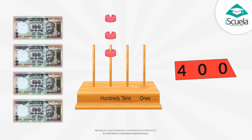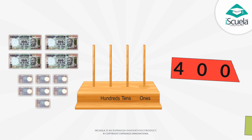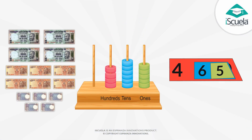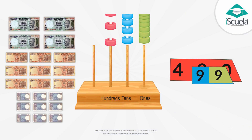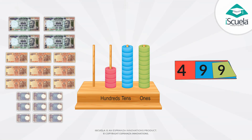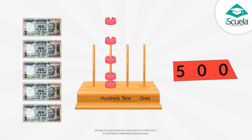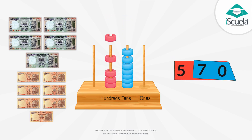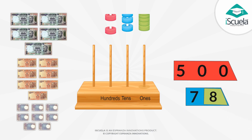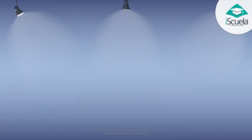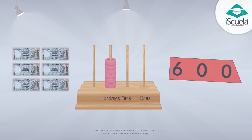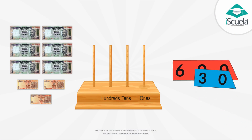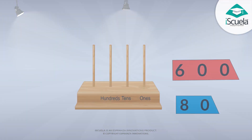400, 407, 465, 499, 500, 505, 570, 578, 600, 608, 630, 600.